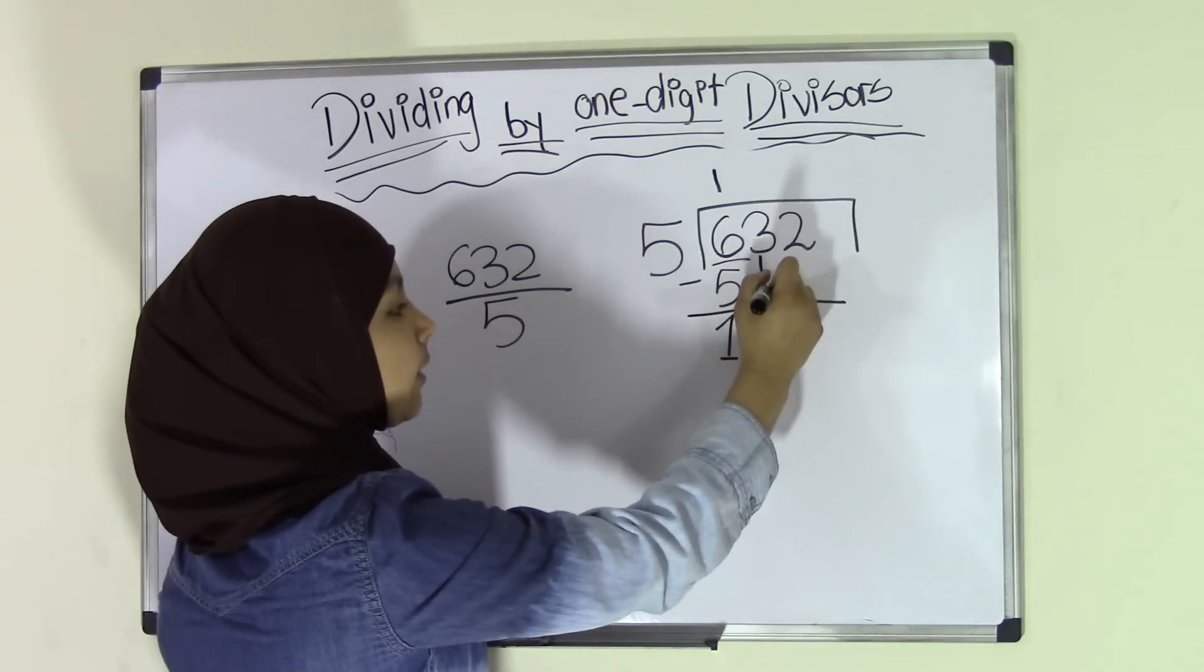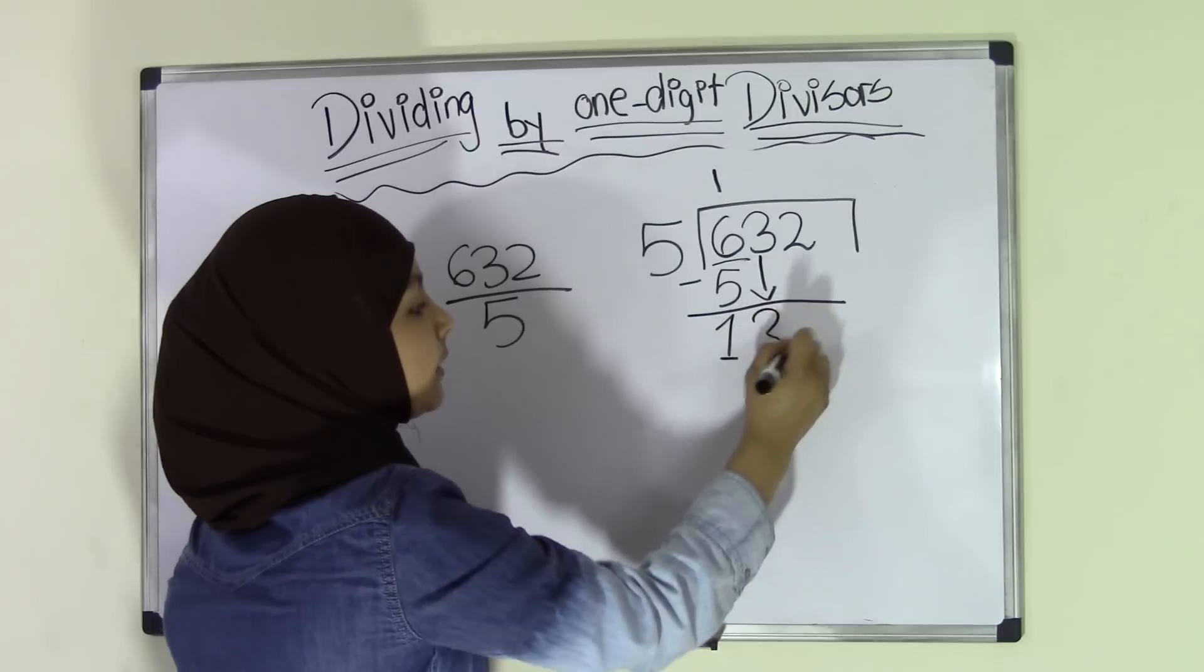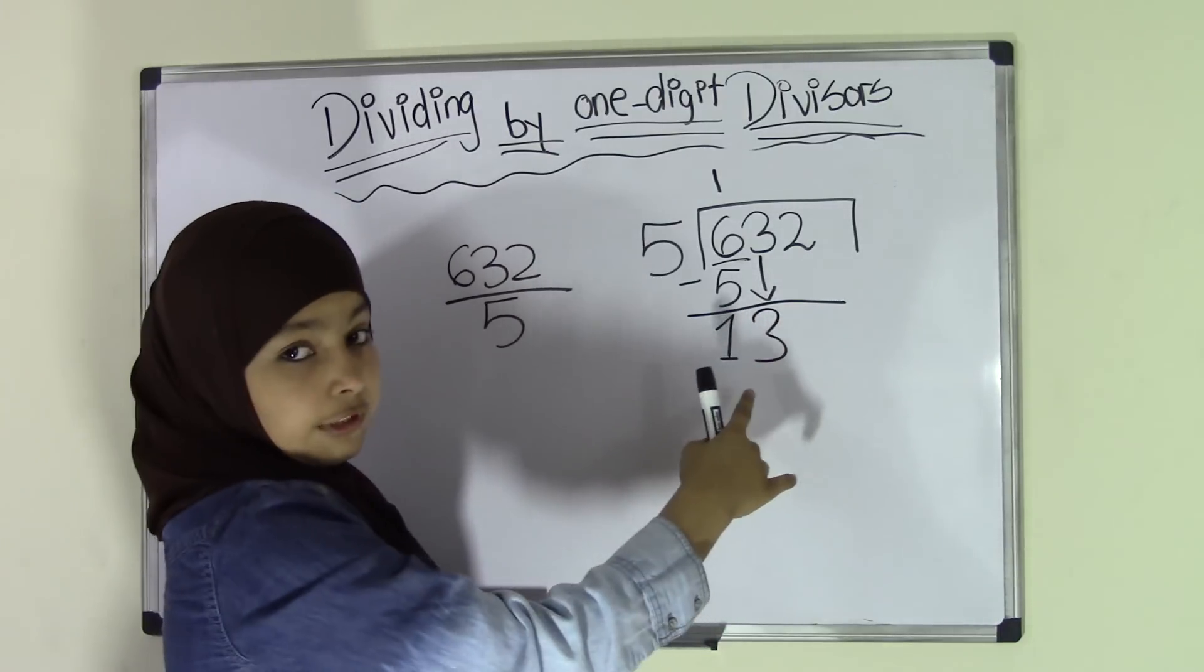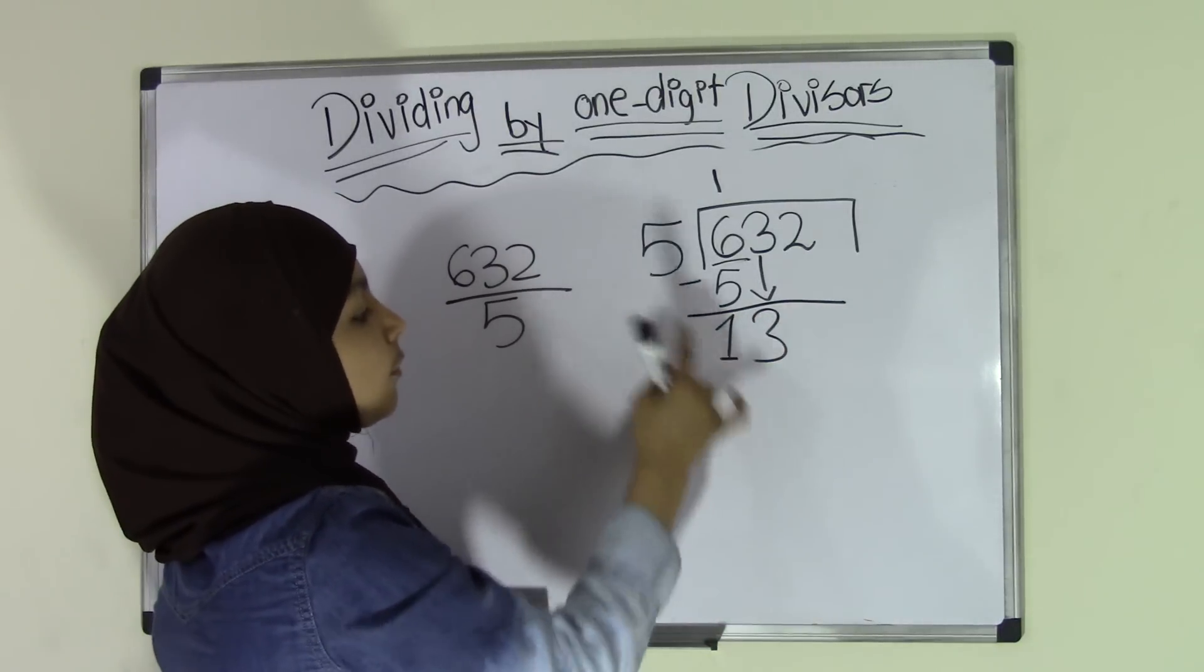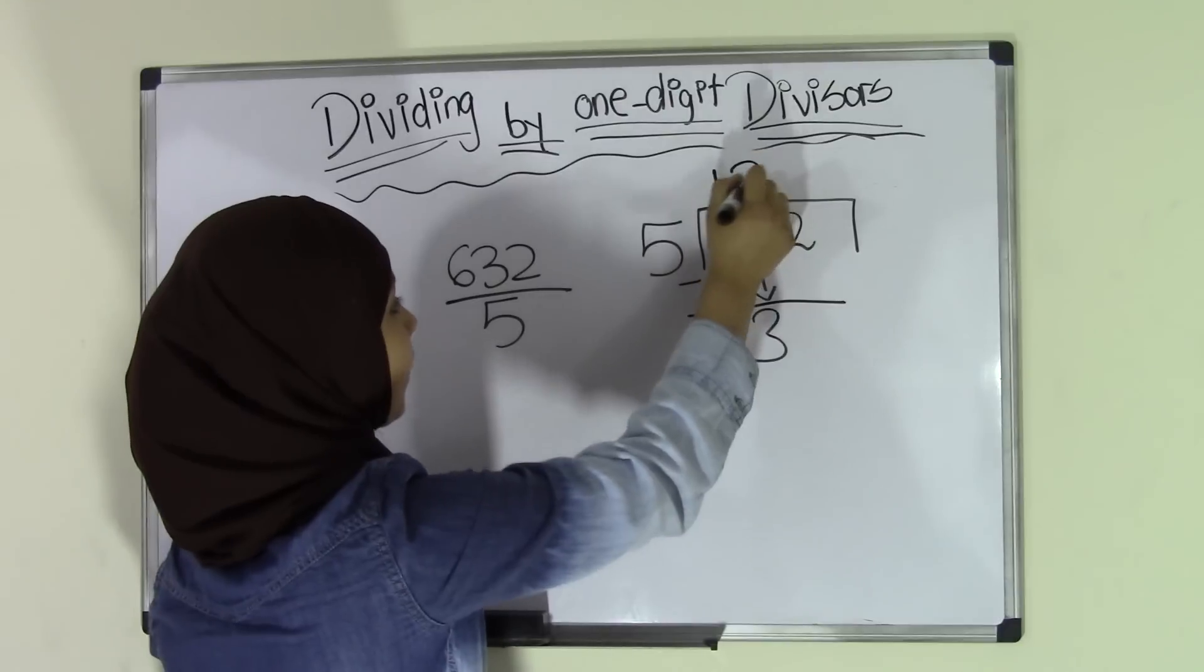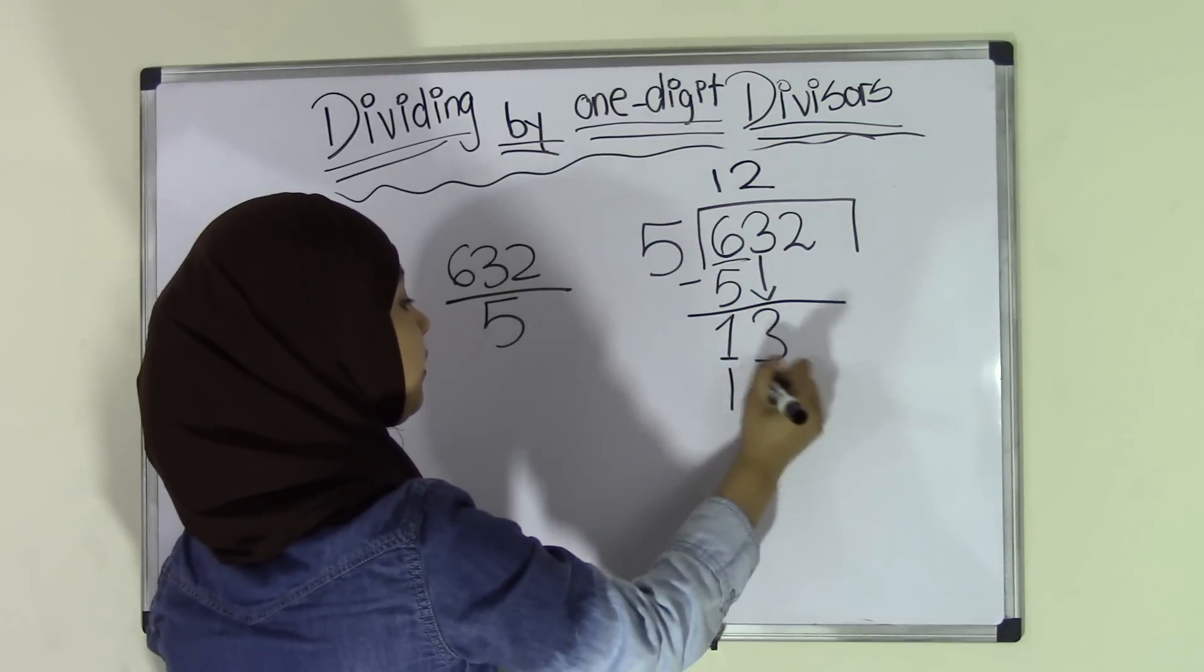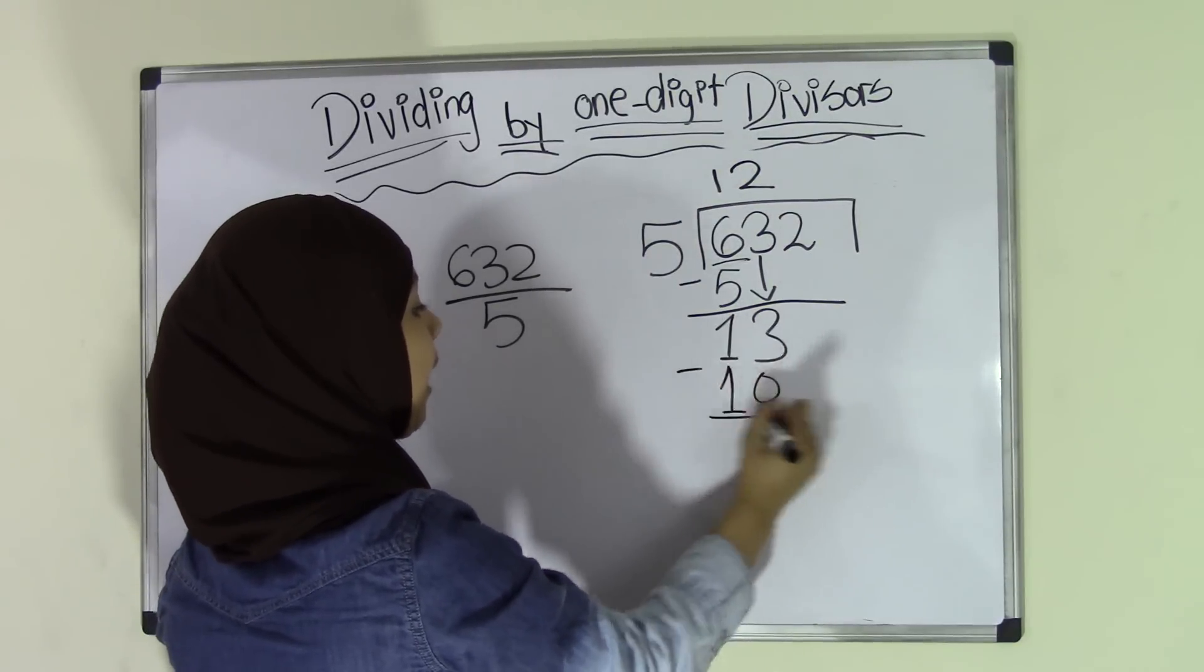Now we're going to go ahead and look at the second number and bring that down. So that means now we have 13. So how many times does 5 go into 13? Two times because 5 times 2 is 10.